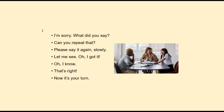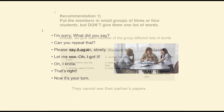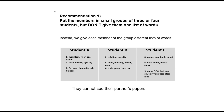Here are my recommendations for how we can make this activity more than just a game. Recommendation one: put the members in small groups of three or four students, but don't give them one list of words. If you just give them all the same list, it'll end up being just a vocabulary game with little conversation skills involved. Instead, give each member of the group different lists of words. They cannot see their partner's papers — this is one way that this is more than just a vocabulary game.